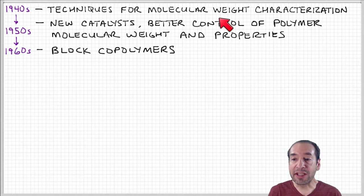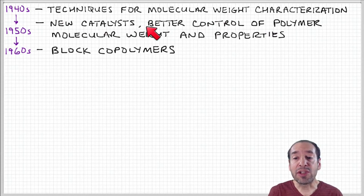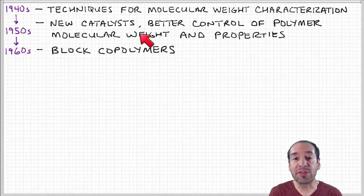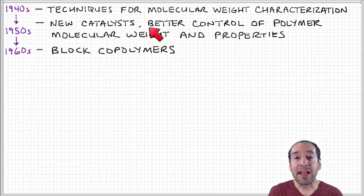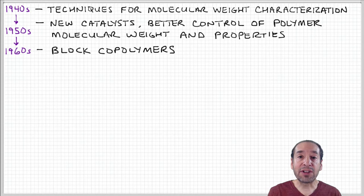Techniques to characterize or measure molecular weight were developed in the 1940s and 1950s. There were also refinements in terms of the chemistry — not necessarily discovering new materials, but discovering new processes to produce them with greater capability to control the chain architecture. Catalysts are chemistry systems that allow the reaction to take place and produce polymers with a controlled molecular weight, or that control side reactions so that the product is more consistent.